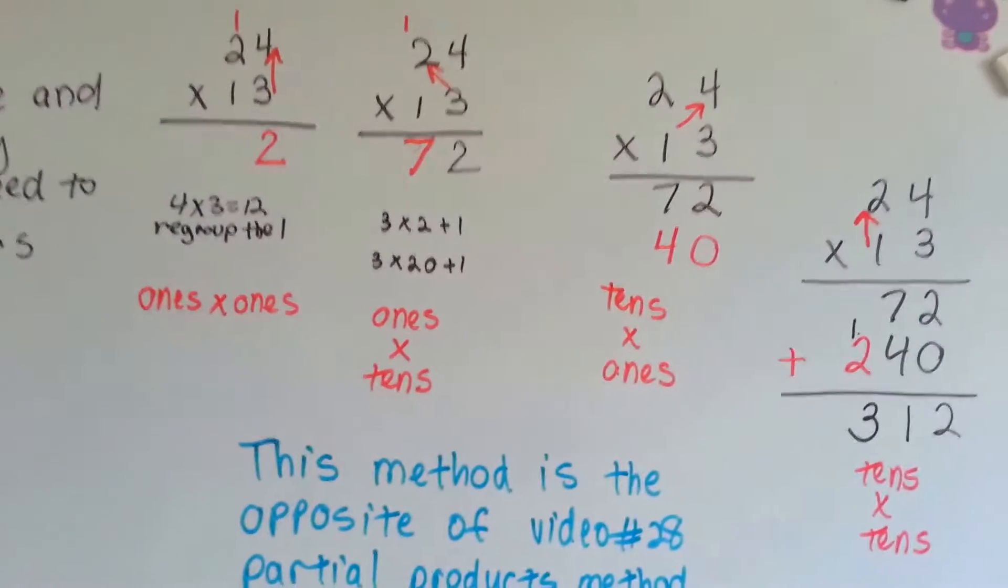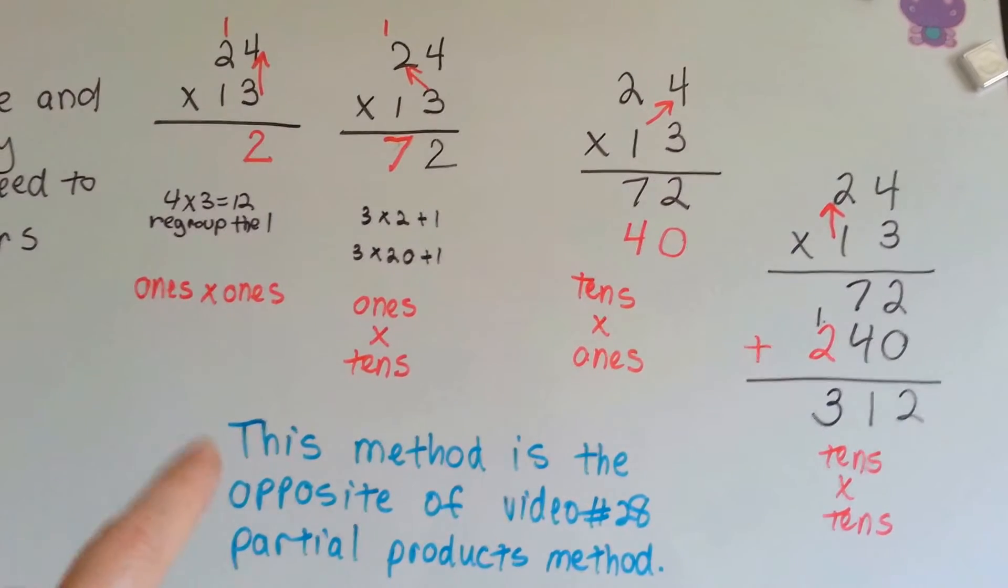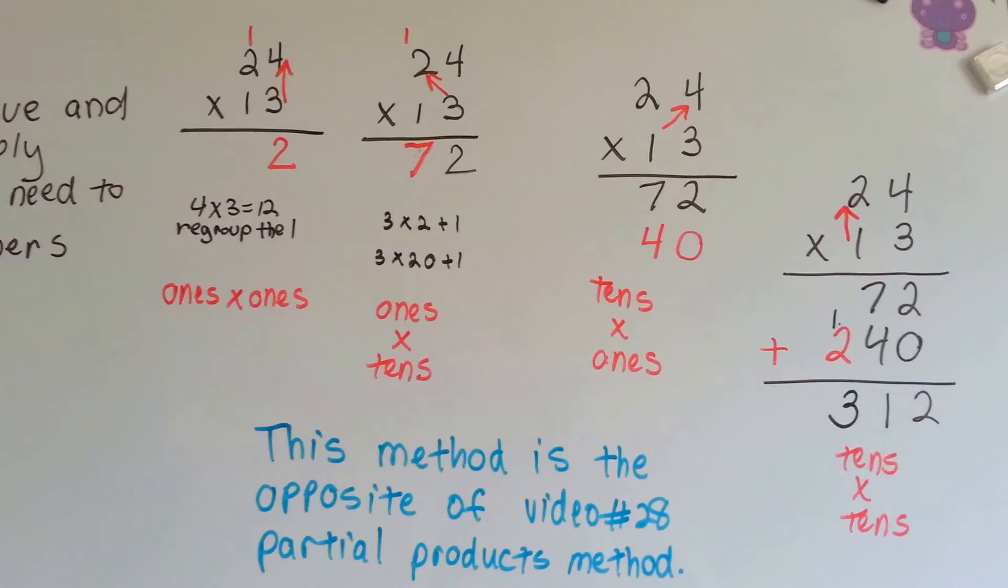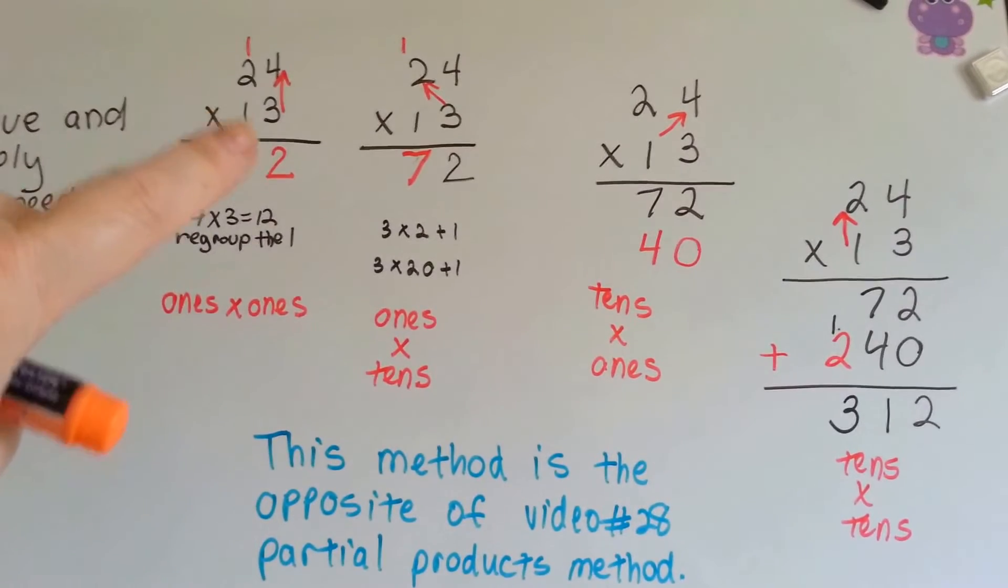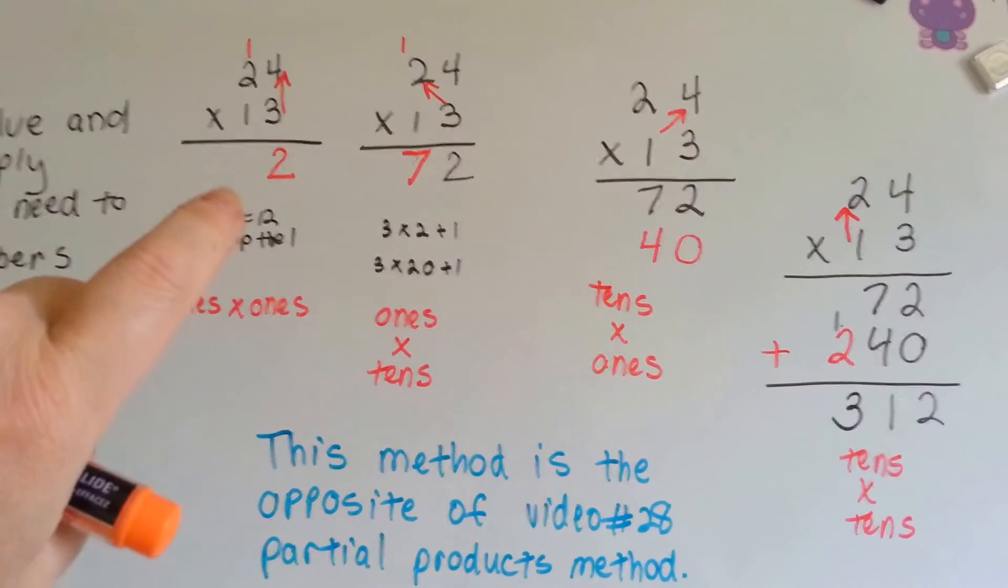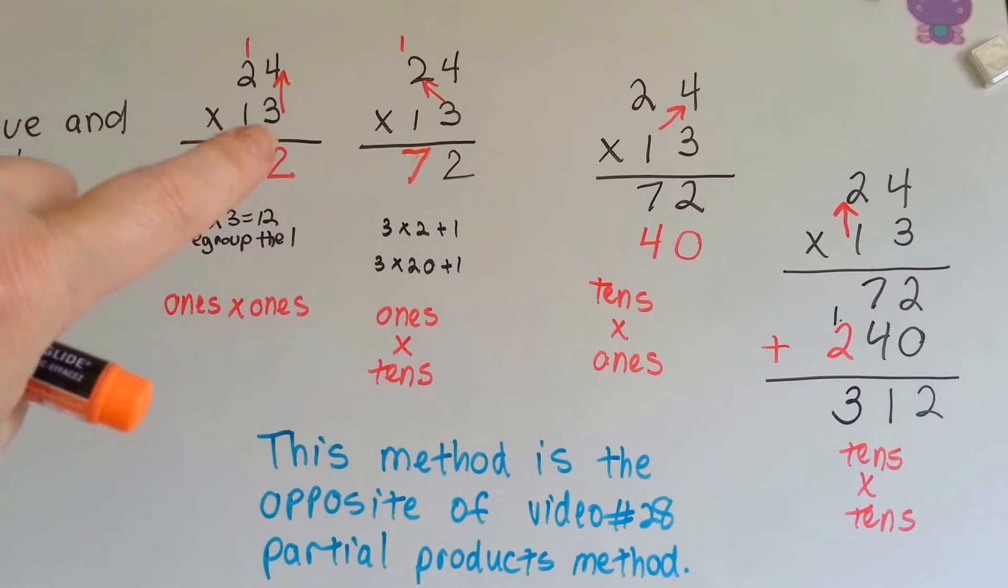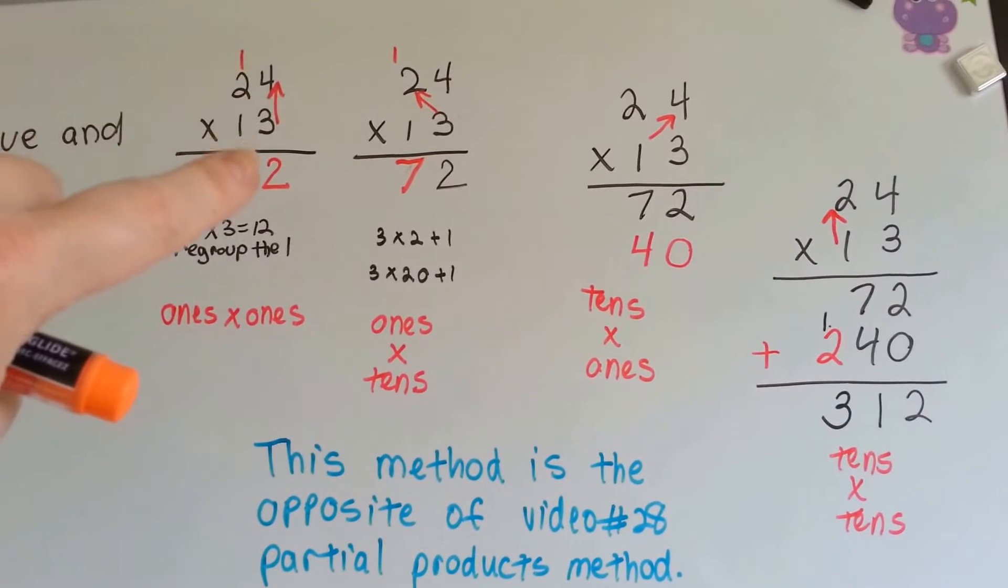This is the opposite of video 28, our last video. This is the opposite of the partial products method. What we're going to do in this method is we're going to multiply the ones. 3 times 4 is 12, and we're going to carry over the 1 and put the 2 down.